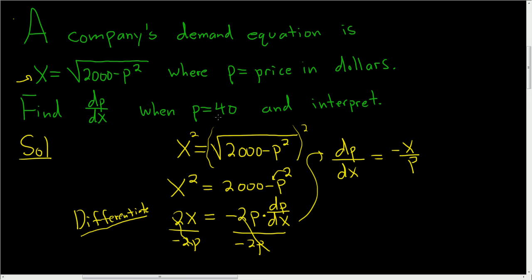Now we want dp/dx when p is 40. But you'll notice we're kind of stuck because we have p but we don't have x. So now we'll go back and find x.